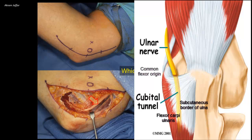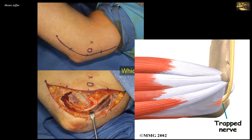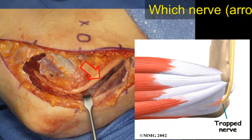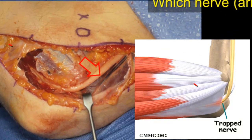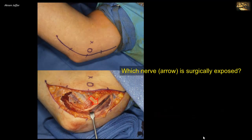Here, the ulnar nerve was trapped in the cubital tunnel, which was exposed and released by cutting the fascia over flexor carpi ulnaris. The ulnar nerve is then transposed anteriorly to avoid further compression.